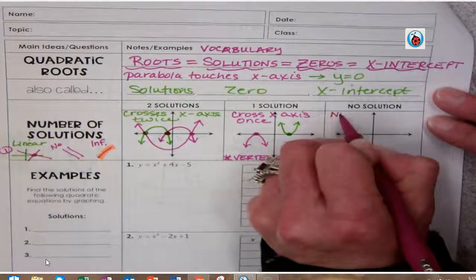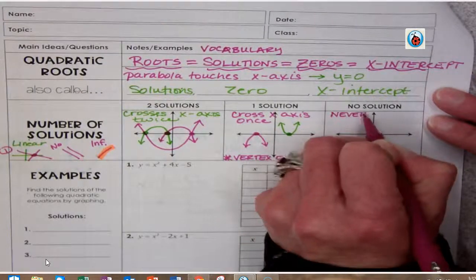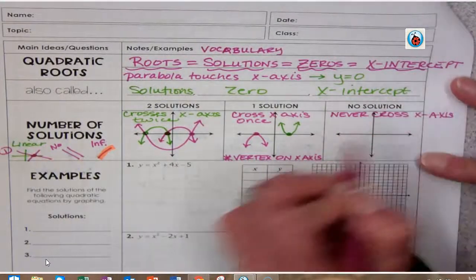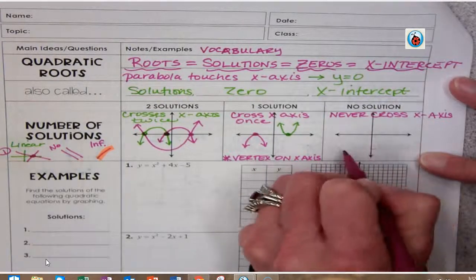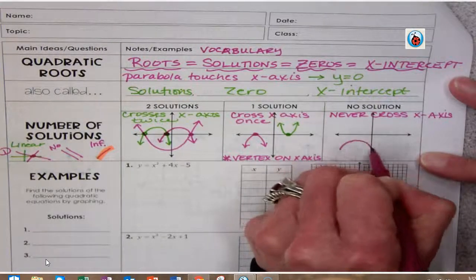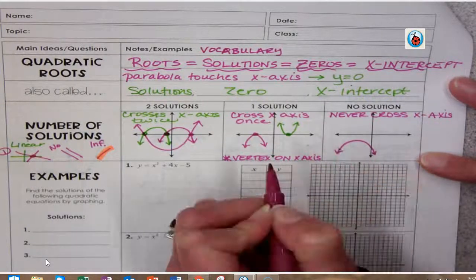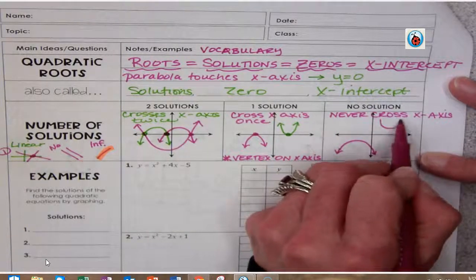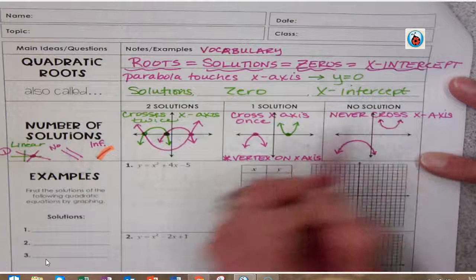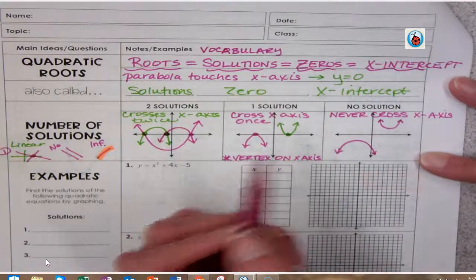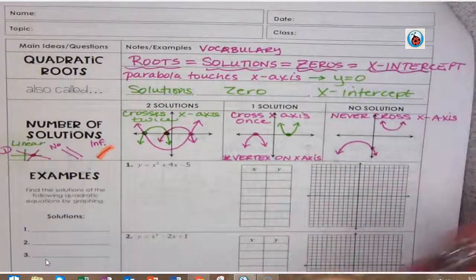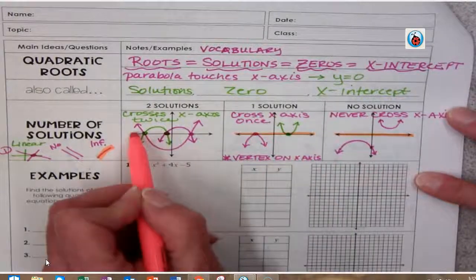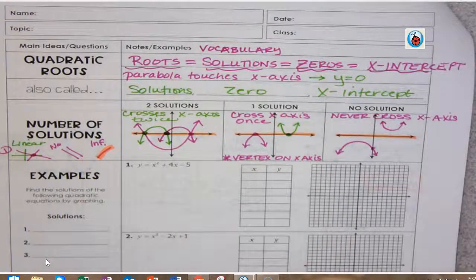If we have no solution, it will never cross the x-axis. And what might that look like? Well, that might look like this. Now notice it can cross the y-axis, it just cannot cross the x-axis. We have no problem if it crosses the y-axis—that's okay. It just cannot cross this x-axis. That's the important one when we're talking about solutions.